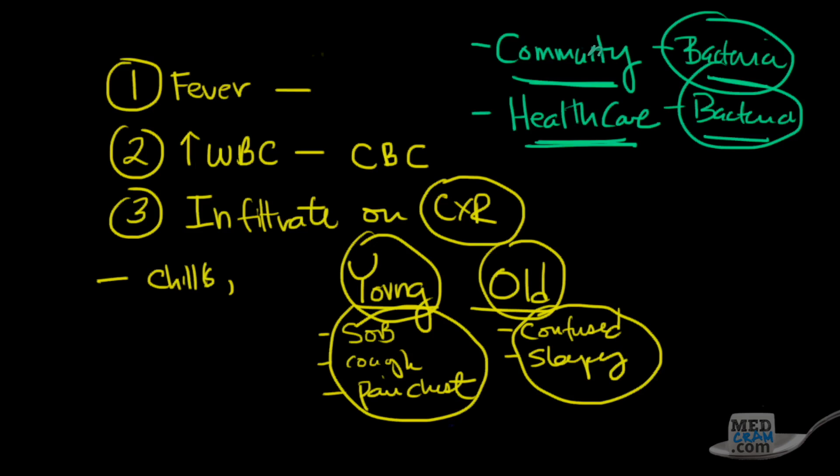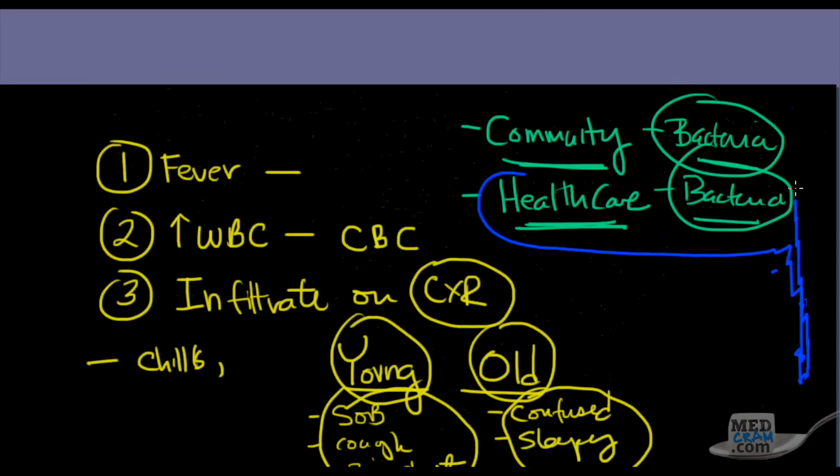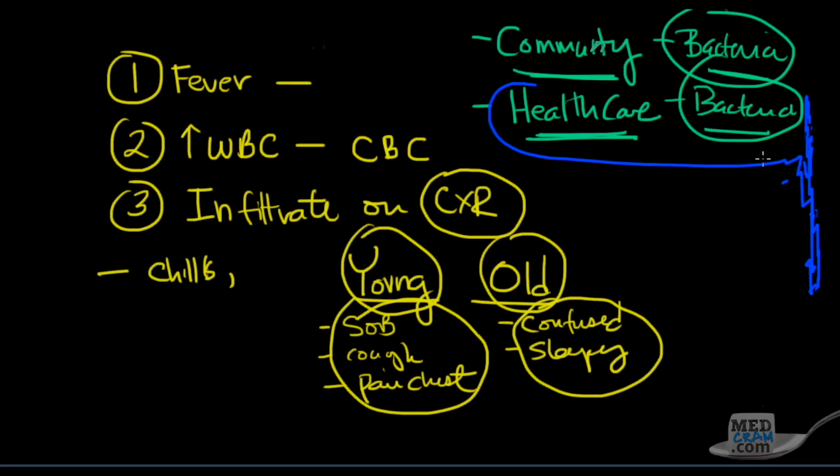Generally speaking, if the patient has come from a healthcare facility into your hospital, then it's going to be a healthcare-acquired infection. If it's from a community, they would be coming from their home or apartment complex. If the patient is already admitted to the hospital and they're developing an infection in the lung after 72 hours, that would be healthcare-acquired.